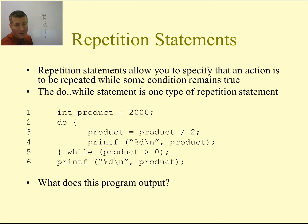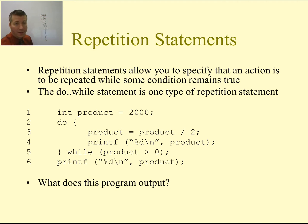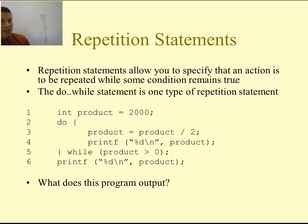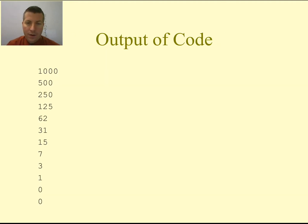1 is greater than 0, so we compute product equals 1 divided by 2, which gives us 0.5. Since this is an integer, we chop the decimal off, giving us 0. We print 0, and then we ask: is 0 greater than 0? The answer is no, so we break out of the do-while loop. On line 6, we print out the value of product, which is 0, one last time. The next slide shows all the numbers printed from that do-while loop.